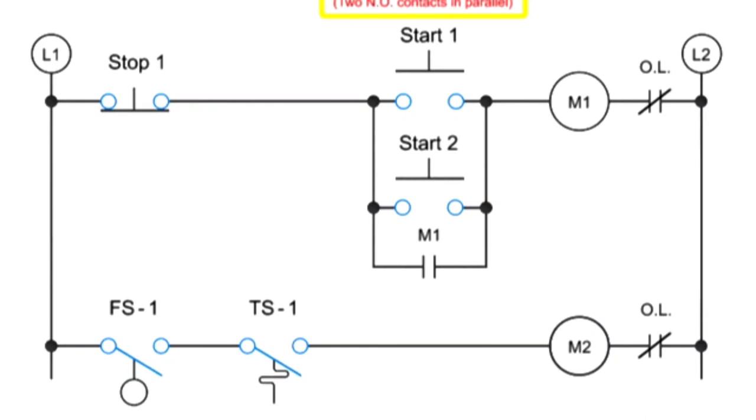Next, let's consider OR logic. This can occur when there are two normally open control functions connected in a parallel arrangement, represented here by two start push buttons. Thus, motor coil M1 can be energized by manually pressing start switch 1 or start switch 2.